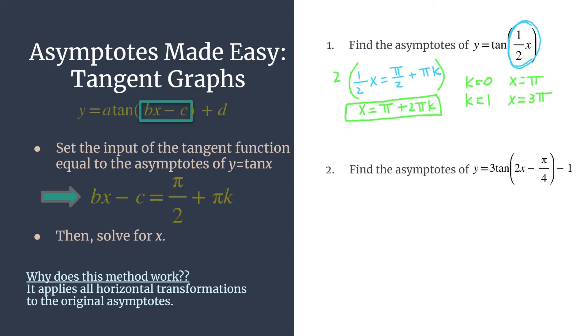We're going to find the asymptotes now for a little bit more complex of a tangent equation, y equals three tangent of two x minus pi over four minus one.